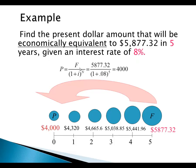Substituting the values: P = $5,877.32 ÷ (1 + 0.08)^5, which equals $4,000. So you need to deposit $4,000 today at time 0 to collect $5,877.32 in five years at an interest rate of eight percent.